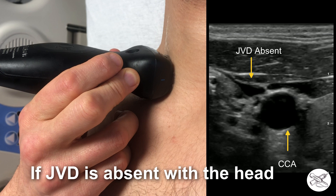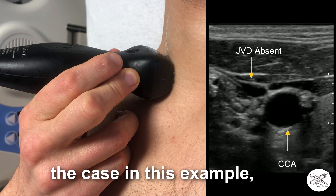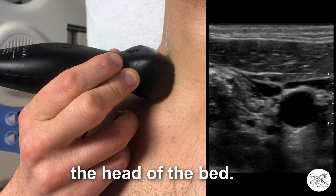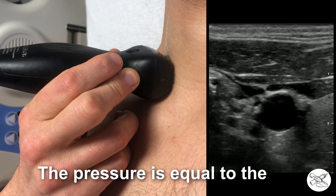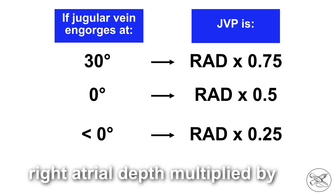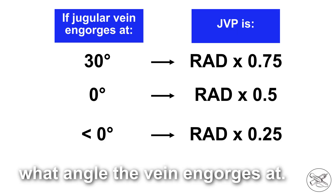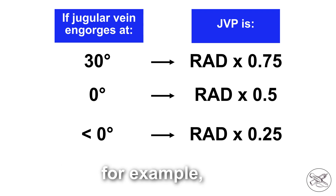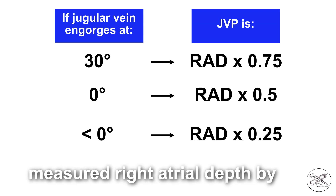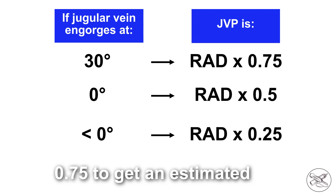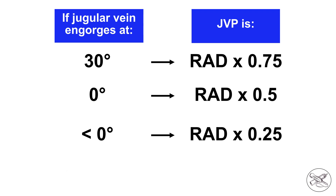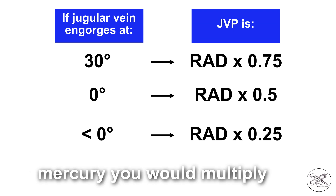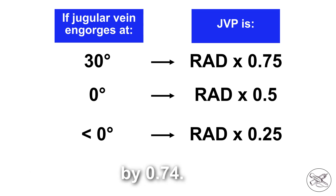If JVD is absent with the head of the bed at 45 degrees, as is the case in this example, then the right atrial pressure or jugular venous pressure can be estimated by lowering the head of the bed. The pressure is equal to the right atrial depth multiplied by a correction factor depending on what angle the vein engorges at. If it engorges with the head of the bed at 30 degrees, for example, then you would multiply the measured right atrial depth by 0.75 to get an estimated right atrial pressure. This value is in centimeters of water. To convert it to millimeters of mercury, you would multiply by 0.74.